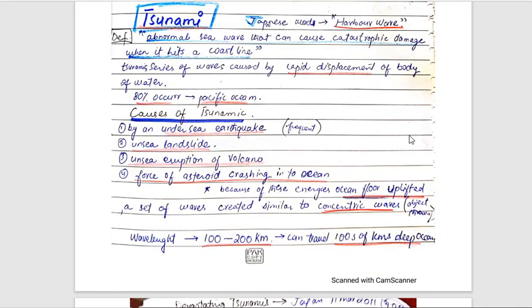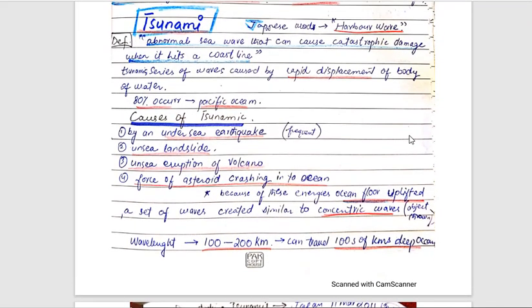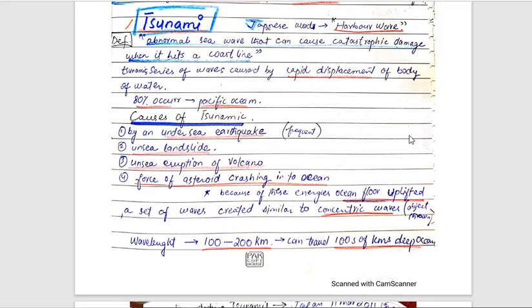So let's start. Today we will study tsunami. We were studying natural disasters. In the disaster, there is a question about it. If there is a question about it, I will tell you how to do it. First of all, you should know that the Japanese word is tsunami. It means the harbor wave.